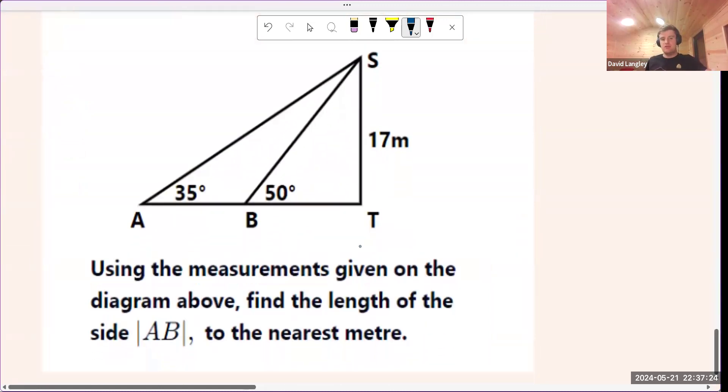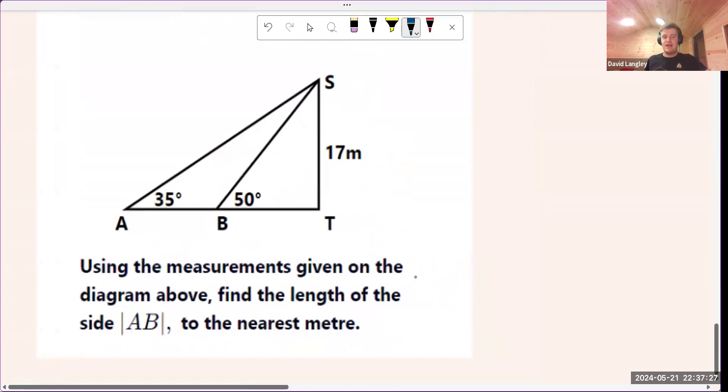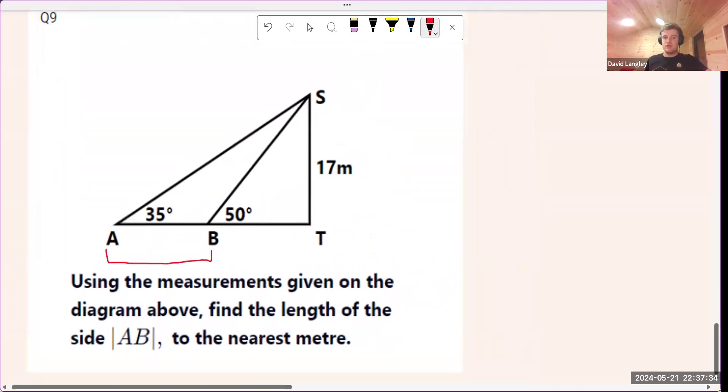What about here? Using the measurements given on the diagram above, find the length of the side AB to the nearest meter. This one has a bit more going on. First things first, we're not really going to be able to find AB by itself because that's part of this triangle here, which doesn't have a right angle. We don't know how to find sides in a non-right angle triangle. However, we can find AT, and then we can find BT, and then we can take the two away. So that's what we're going to do.